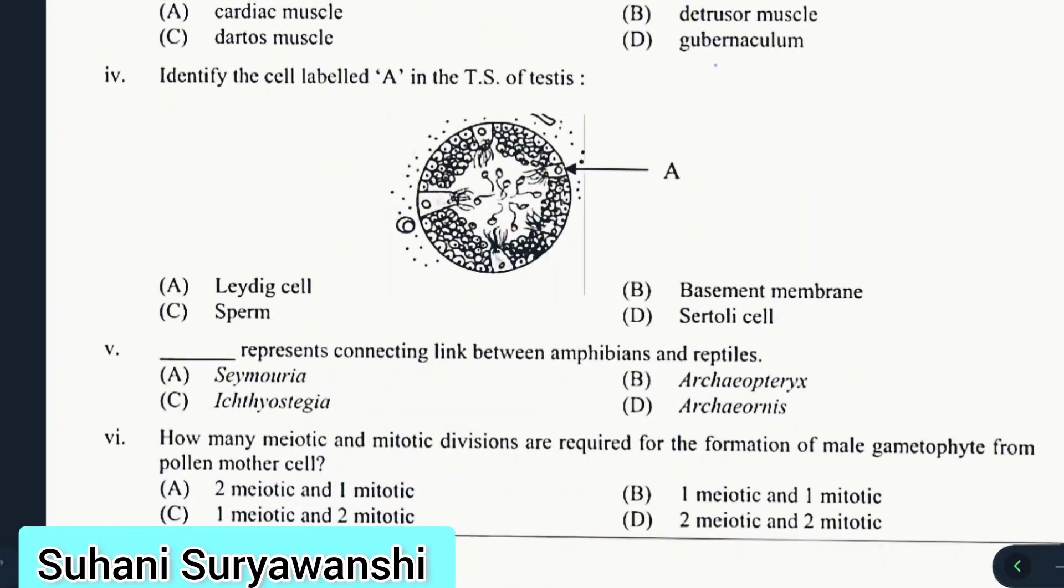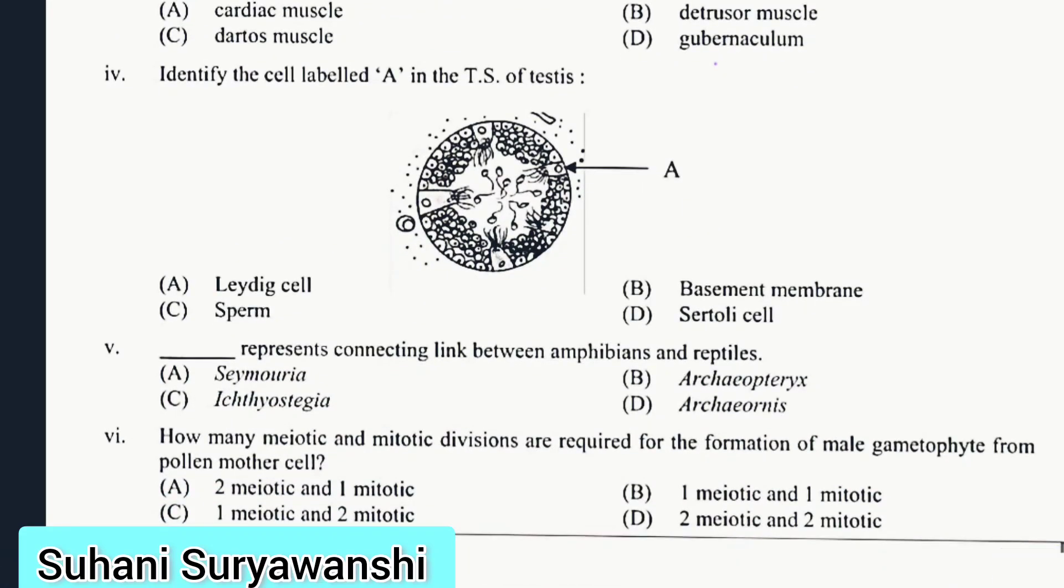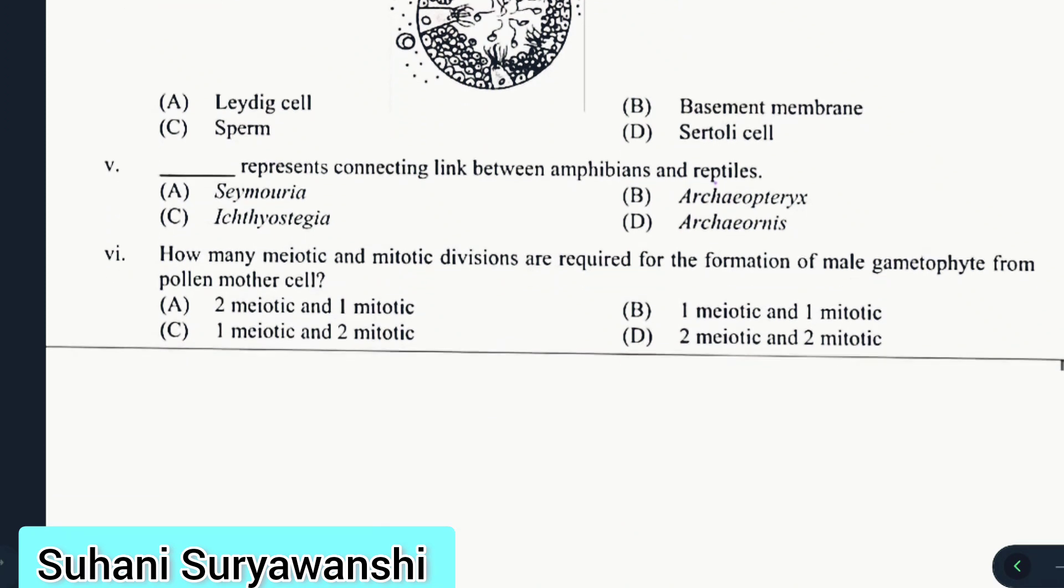Question 4: Identify the cell labeled A in the T.S. of testis. You will see this diagram and the cell labeled A. The options are Leydig cell or sperm, basement membrane or Sertoli cell. The correct answer is sperm, as the tails are visible on the outside.